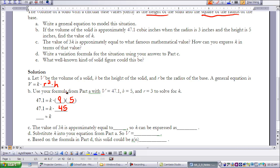So if I take 47.1 and divide by 45, that's going to give me an approximate value for K, which is about 1.047.